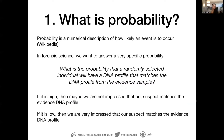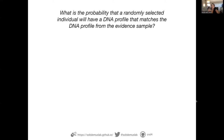In forensic science, we want to answer a very specific probability: what is the probability that a randomly selected individual will have a DNA profile that matches the DNA profile from the evidence sample? If this number is high, then we're not very impressed that our subject matches the DNA evidence, because it is very likely I could just grab a random person off the street and there would be a match. But if this number is low, then I'm very impressed if I find a person that matches.